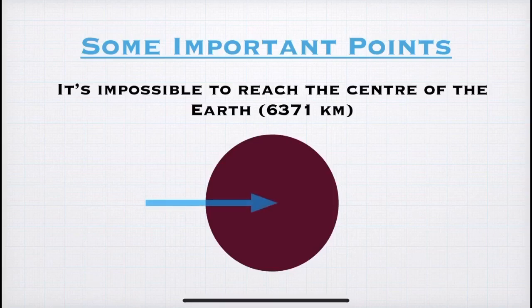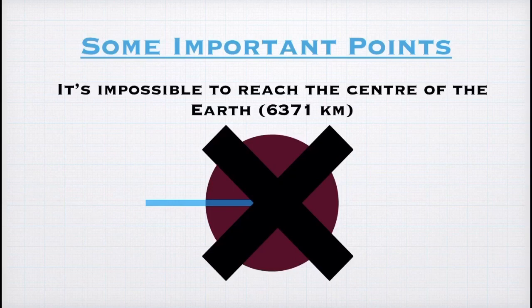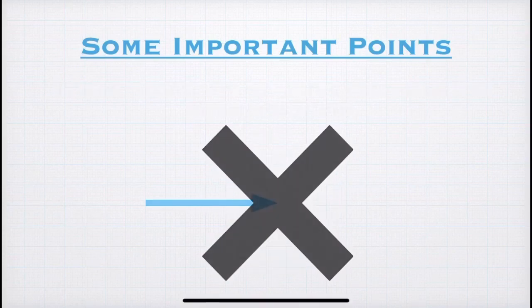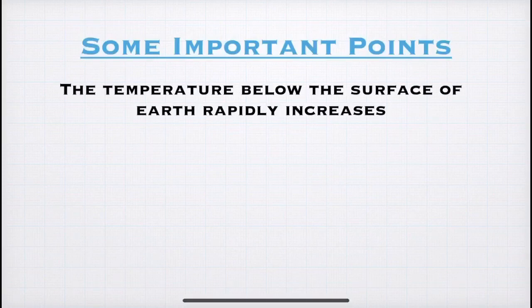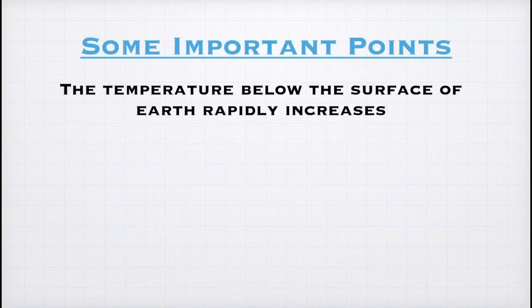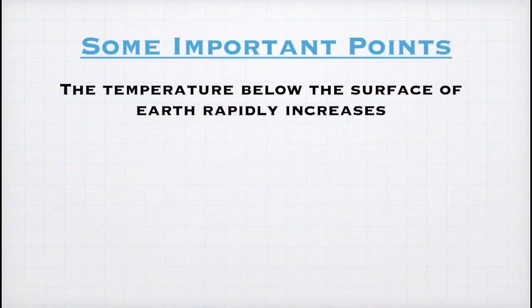It is impossible for us to reach the center of the earth, because the radius of the earth is 6371 km. You can compare it with the distance between Kashmir and Kanyakumari, which is 2800 km approximately. So to reach the center of the earth, you will have to dig more than twice the distance between Kashmir and Kanyakumari. The other important thing to remember is that temperature below earth increases rapidly, so much so that even rocks are in molten form. Hence, the deepest mine in the world is only about 4 km deep, which is in South Africa.